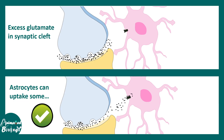This is why this particular cycle is really important. First, it is a fast way of generating glutamate. Second, it is important for maintaining glutamate balance in the synaptic cleft.